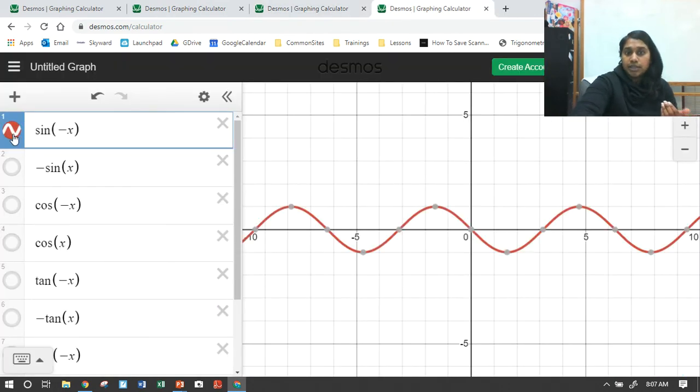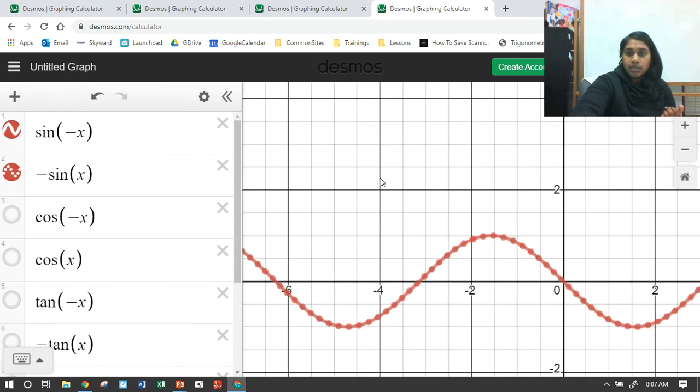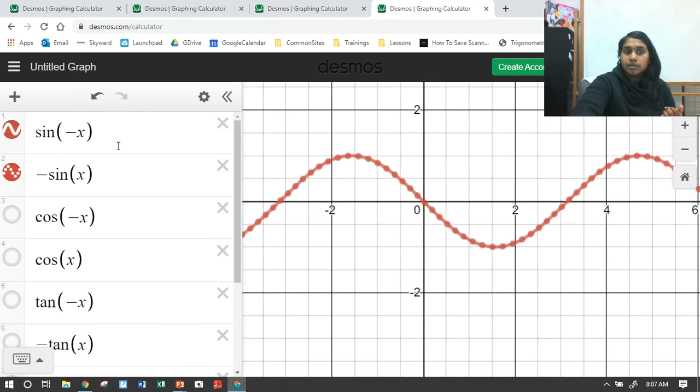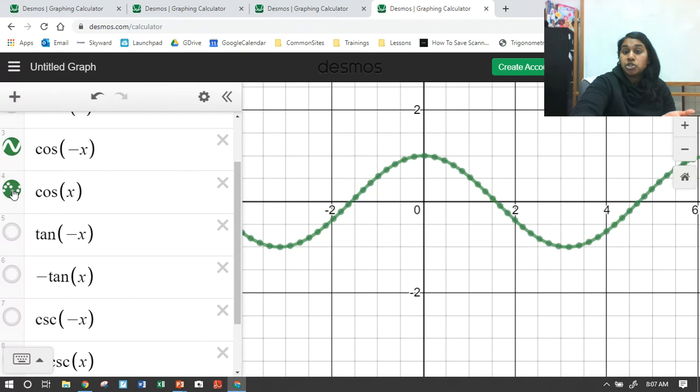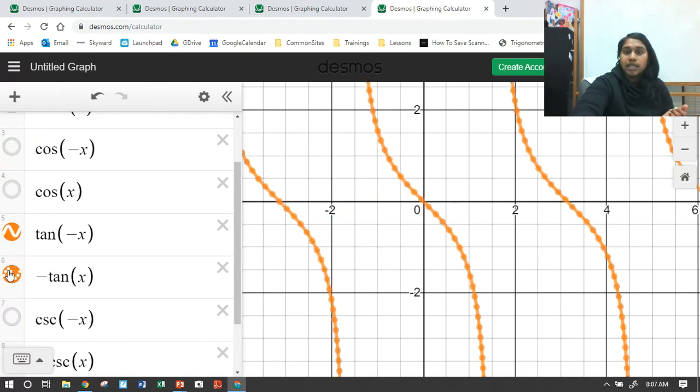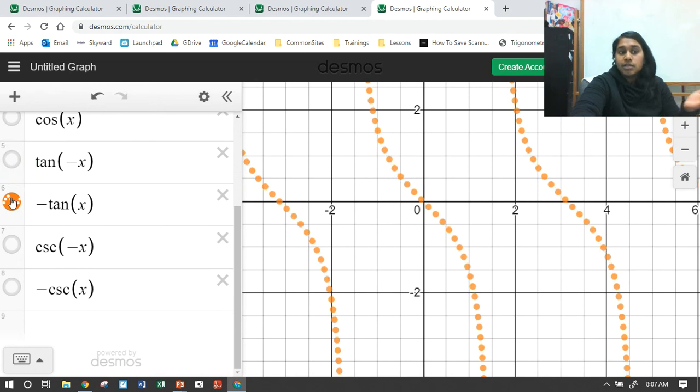What about the even odd? Well, here is sine of negative x, and look what happens when I have sine reflected over the x. It's the literal same value. What about cosine? Cosine of negative x doesn't change anything. What about tangent? Tan of negative x becomes negative tan x. What about cosecant?